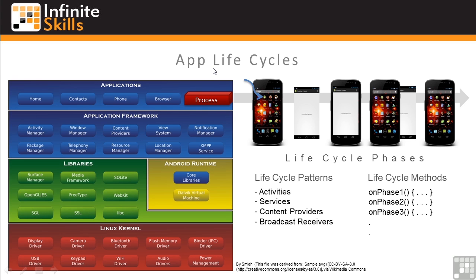Now let's look at how Linux processes are used by your apps. One of the major concepts in Android is that of app life cycles. When your app is started by the user, Android starts a process that moves through a life cycle. The different types of components have different life cycles — that is, the phases the app passes through after it's initiated. When an app enters a given phase, life cycle methods are executed, giving the app the opportunity to carry out actions at that point.